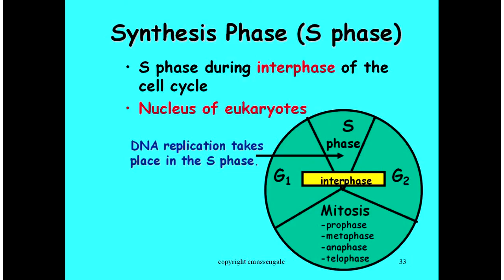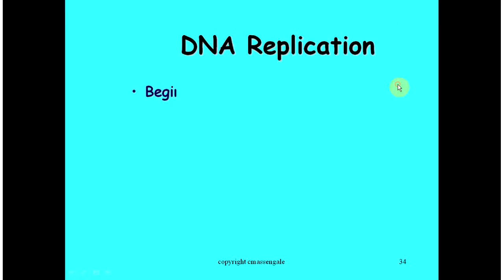This is just a little diagram of the whole cell cycle. They make mitosis seem way longer than it actually is. Remember, that happens at the very end of the cell cycle. They've split up interphase into the G1, S, and G2 phases.